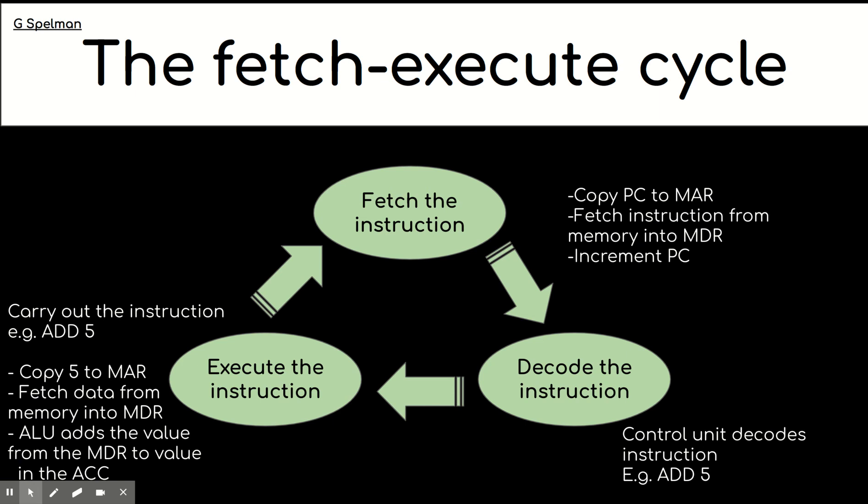And then the ALU will actually do the calculation of adding what's just been taken from the MDR, and that's going to be added to whatever was already in the accumulator. So in the previous example, I think we might have had six in the accumulator and 10 was added, so eventually we got 16 and that stored in the accumulator.